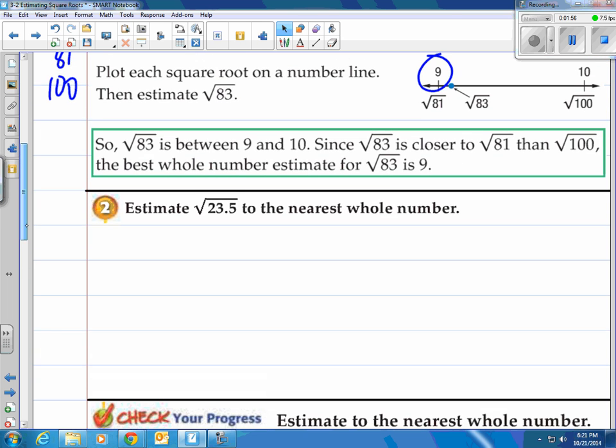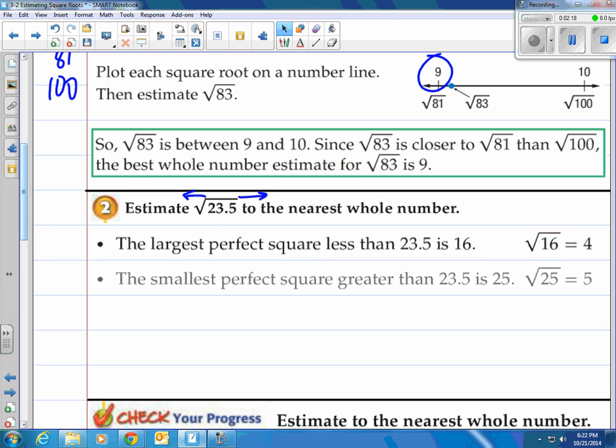Let's take a look at number 2. Estimate the square root of 23.5 to the nearest whole number. Again we need to find the closest one above 23.5 that's a perfect square and the perfect square that's closest below 23.5. The largest perfect square less than 23.5 is 16. Square root of 16 is 4. And the smallest perfect square greater than 23.5 is 25. Square root of 25 is 5.